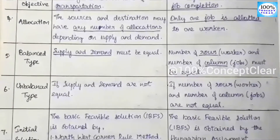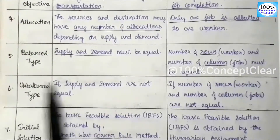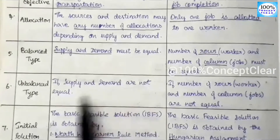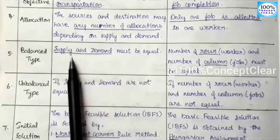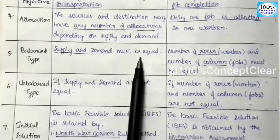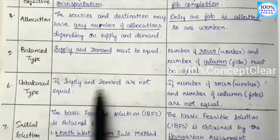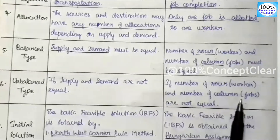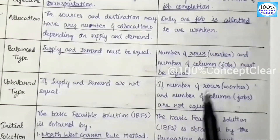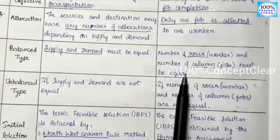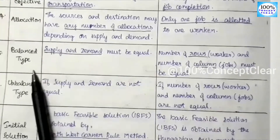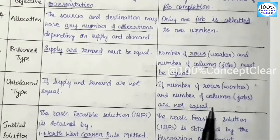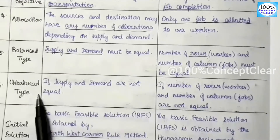In the unbalanced transportation problem, demand and supply are not equal — if they are equal it is balanced, otherwise it is unbalanced. For the assignment problem, if the rows and columns are not equal, that is the unbalanced type.